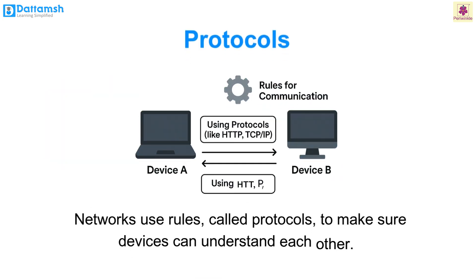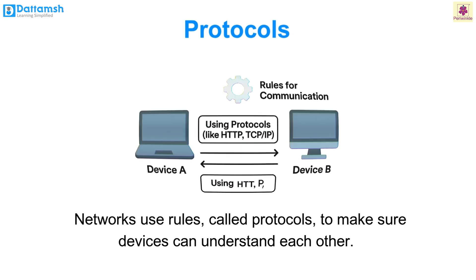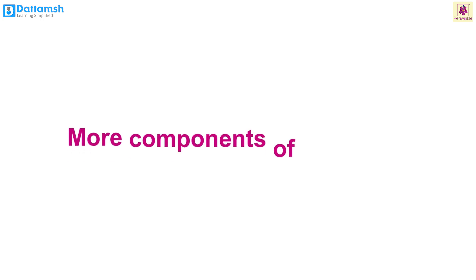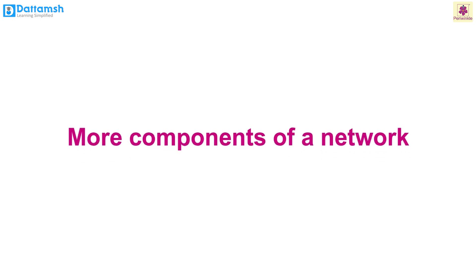Networks use rules called protocols to make sure devices can understand each other. It is similar to how we have rules to have a conversation. And that's how a computer network works — it's like a big team of techie friends sharing, talking and working together. Now let's learn more components of a network.